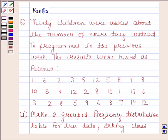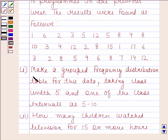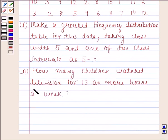This is the data given to us. The first part is make a grouped frequency distribution table for this data, taking class width 5 and one of the class intervals as 5 to 10. The second part is how many children watch television for 15 or more hours a week.